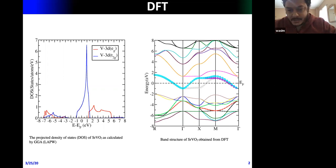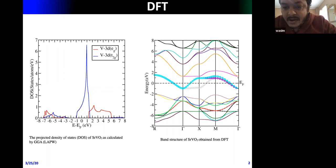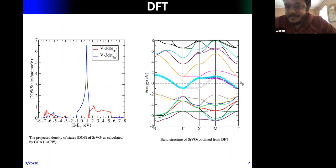Near the Fermi region, the t₂g orbitals dominate; the eg orbitals don't have significant contributions. This is reflected in the band structure: at the Fermi level there are three t₂g bands, and away from the Fermi level those are isolated bands which are not important.